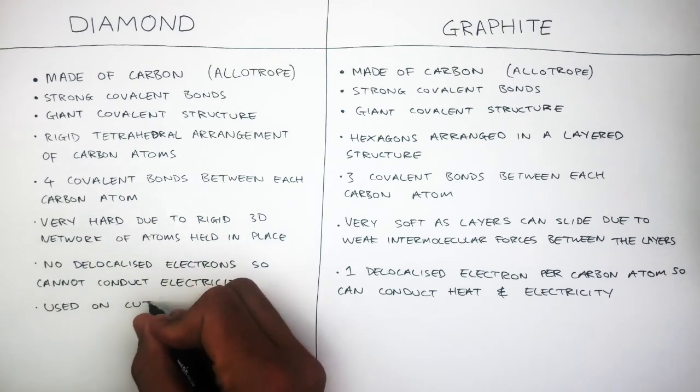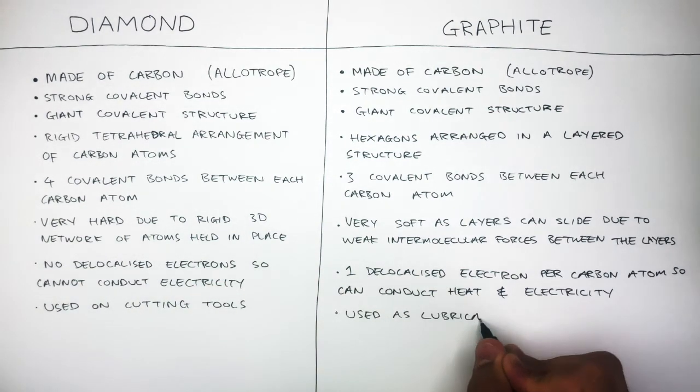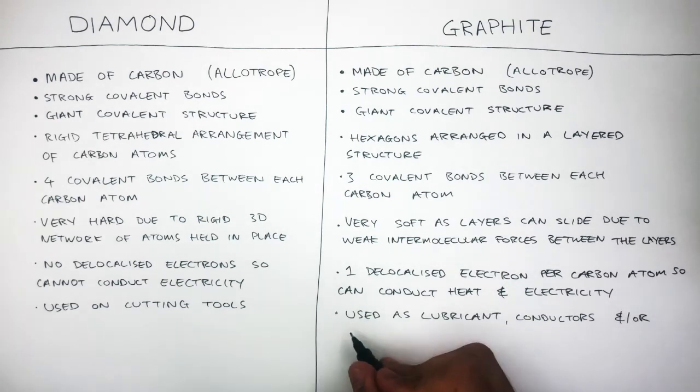Diamond is used on cutting tools. Whereas graphite is used as a lubricant, conductor, and in pencils.